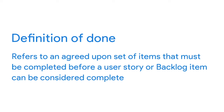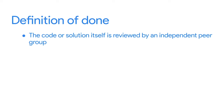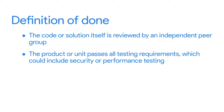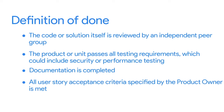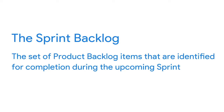Definition of done refers to an agreed-upon set of items that must be completed before a user story or backlog item can be considered complete. This may include: the code or solution is reviewed by an independent peer group; the product passes all testing requirements including security or performance testing; documentation is completed; all user story acceptance criteria specified by the product owner is met; and the product owner accepts the user story. The team should determine what belongs on this list and improve it as needed. A key deliverable of sprint planning is the sprint backlog — the set of product backlog items identified for completion during the upcoming sprint.